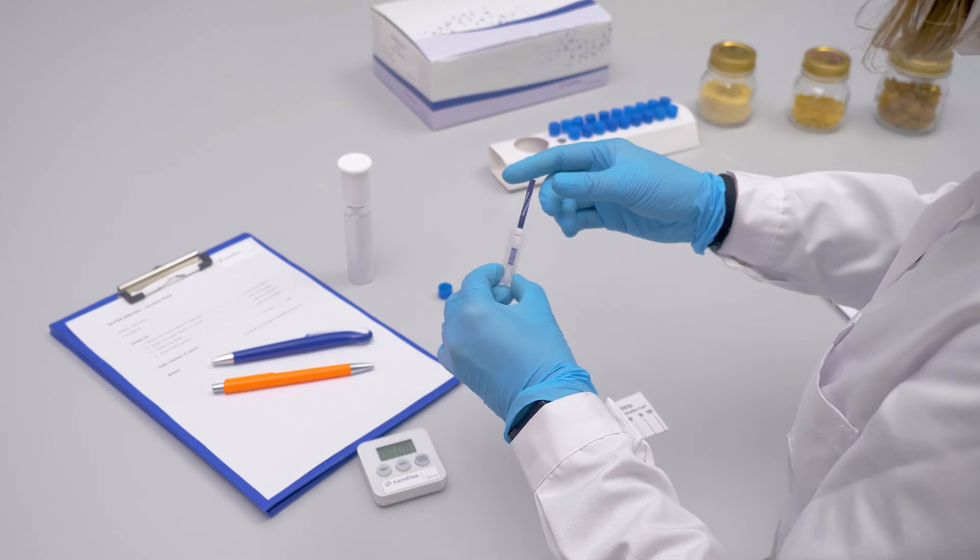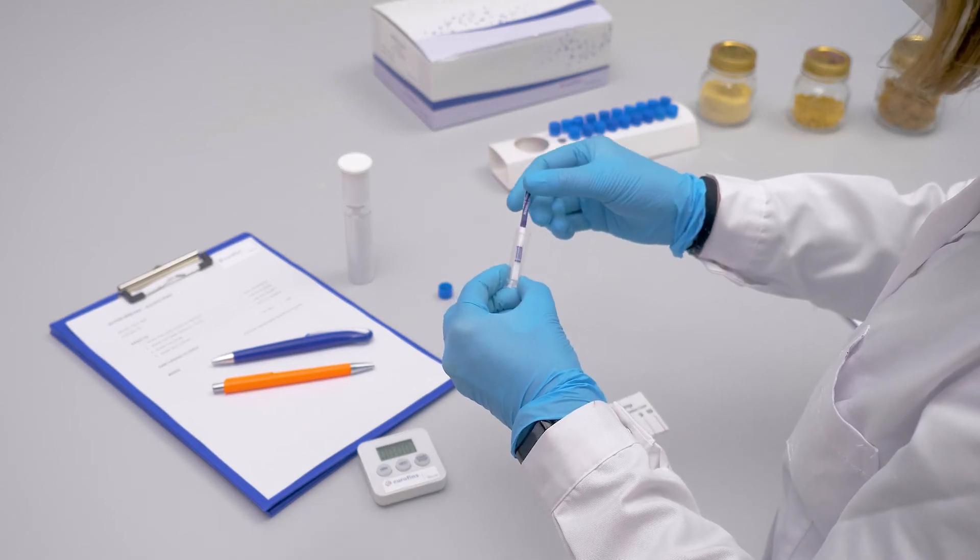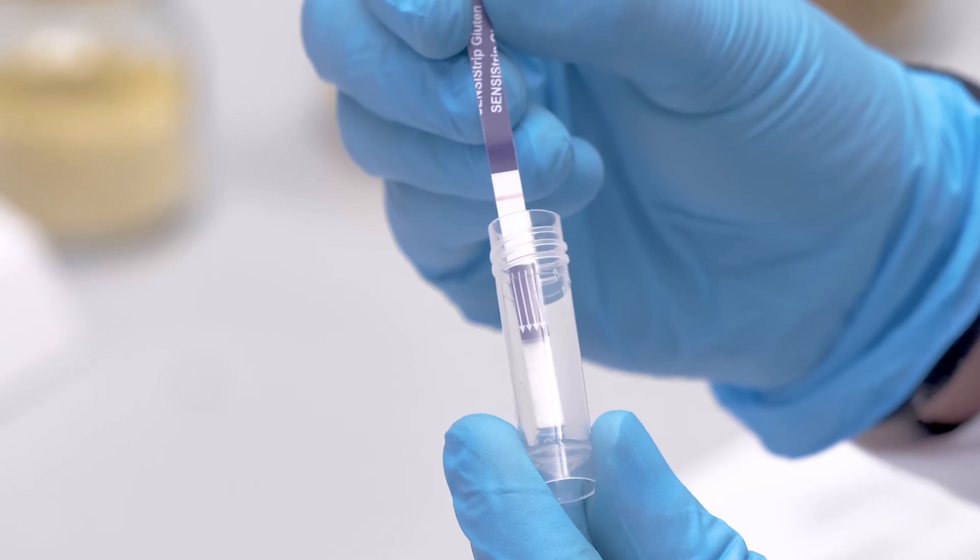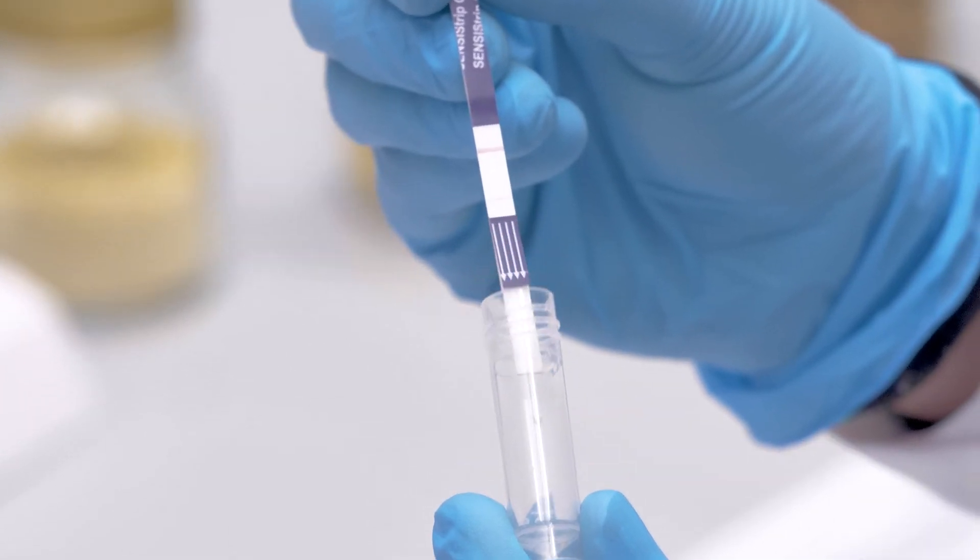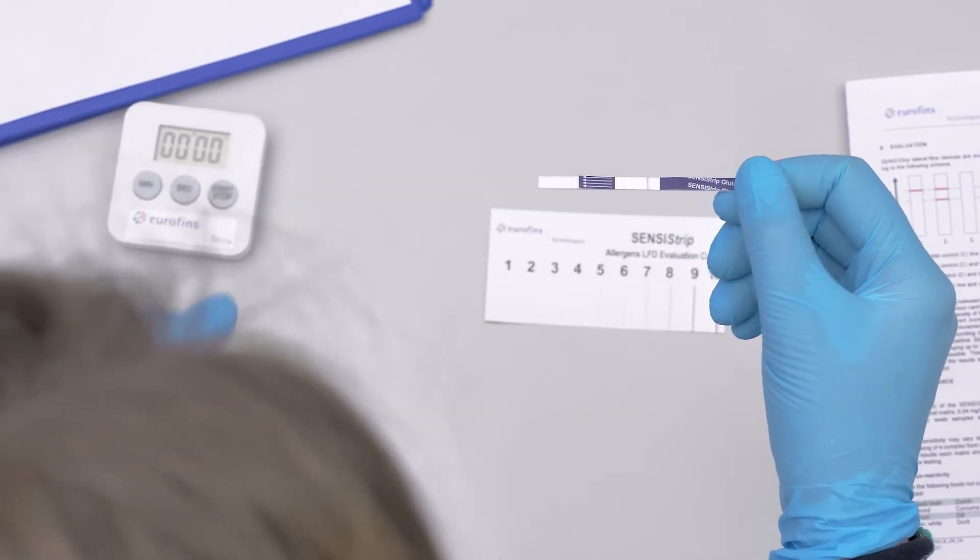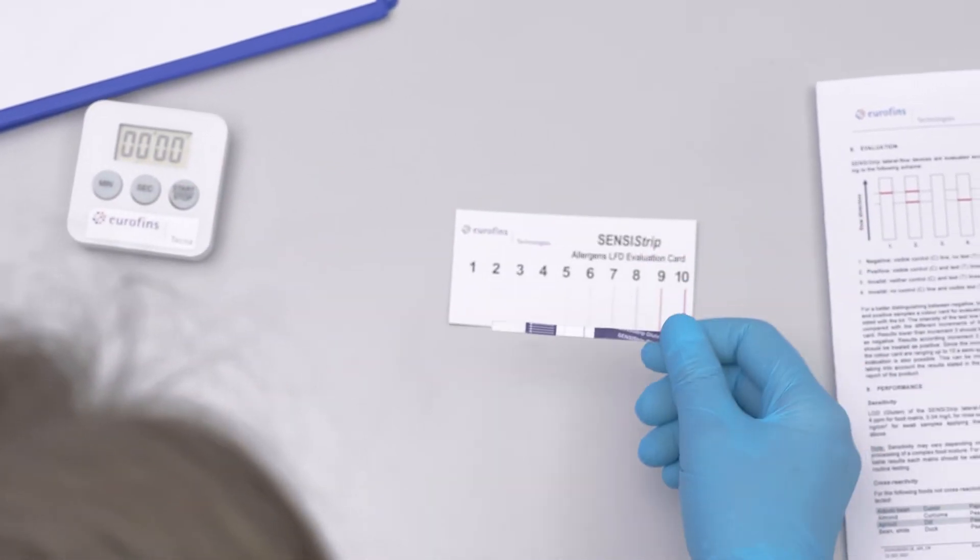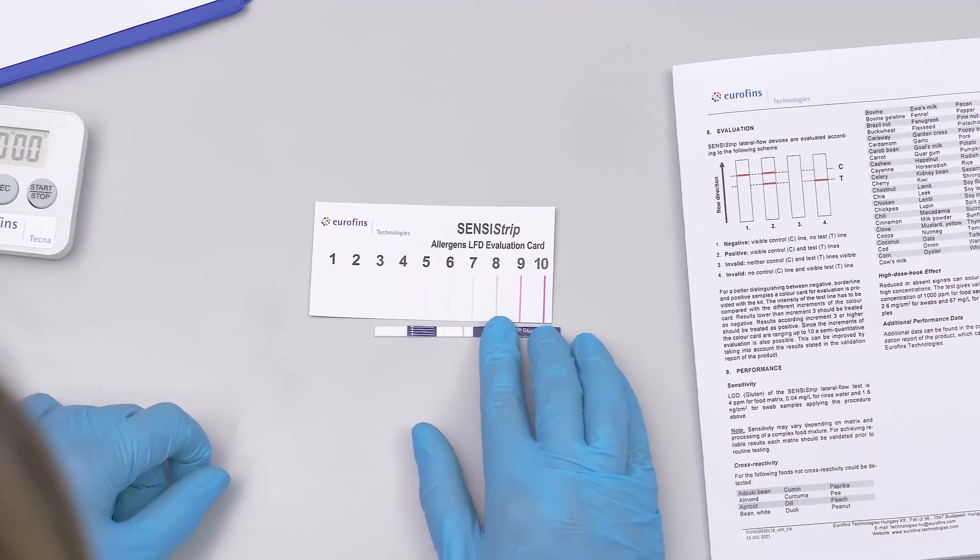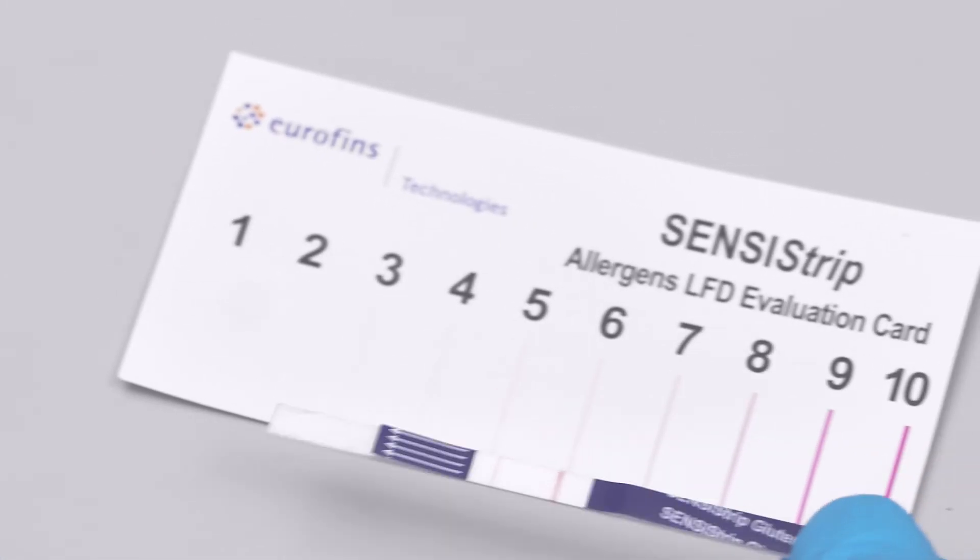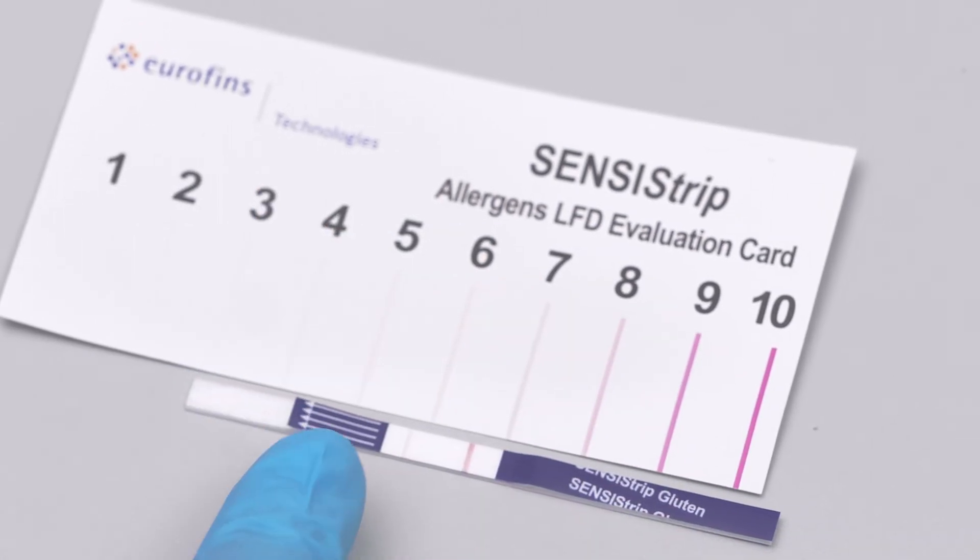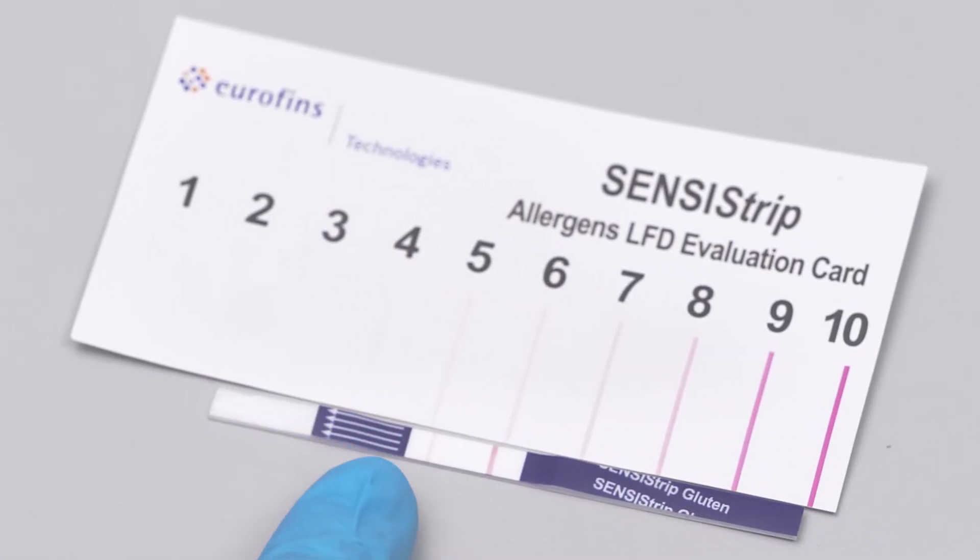Extract the strip and verify the validity of the test. The test is reliable only if the control line marked with a C is developed and visible. Only then it is possible to evaluate the result of the test using the evaluation card contained in the kit. The sample is considered negative if the test line is absent or has intensity one or two, while it is positive if the band is more intense.